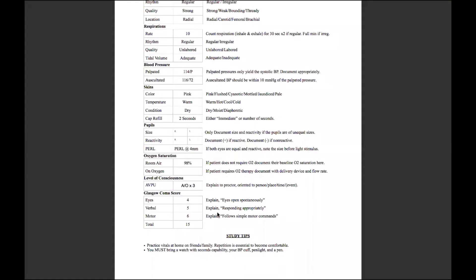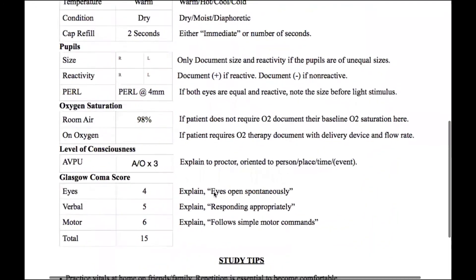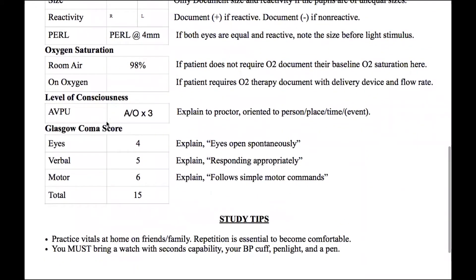For our last section of the Vital Signs Study Guide, we're going to combine level of consciousness and the GCS. The AVPU is alert, verbal, painful, unresponsive. If they're alert or we can wake them up, we need to ask orientation questions. Medical patients are A and O times three — person, place, time. Trauma patients are A and O times four — person, place, time, and recall of the event.